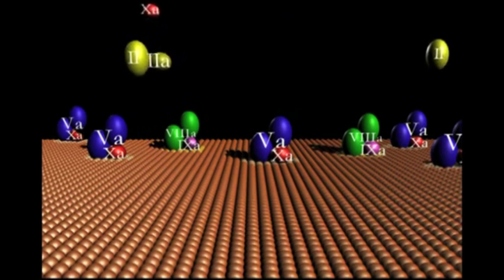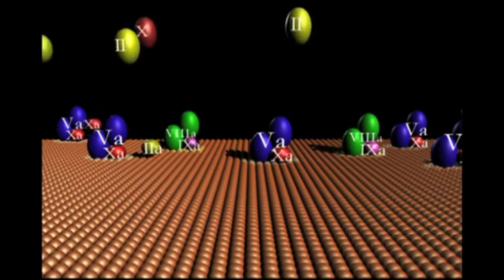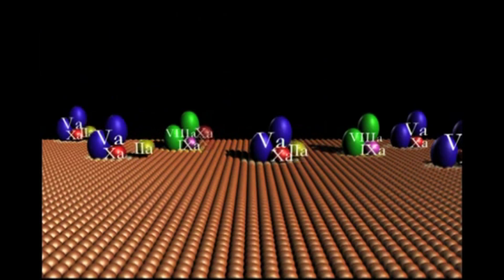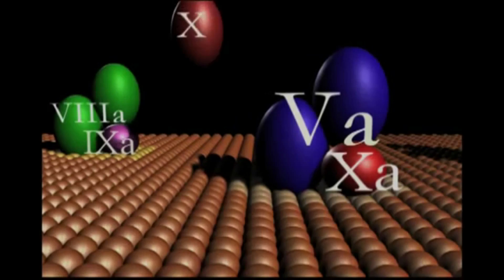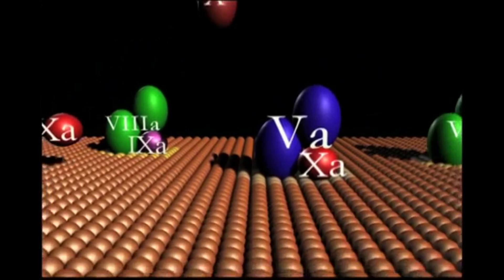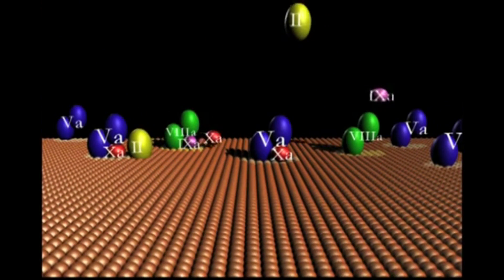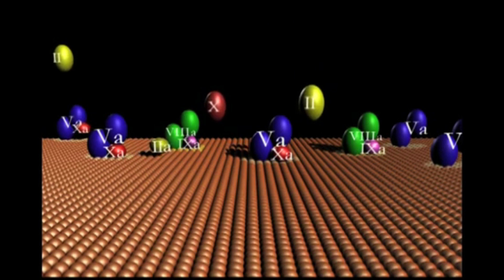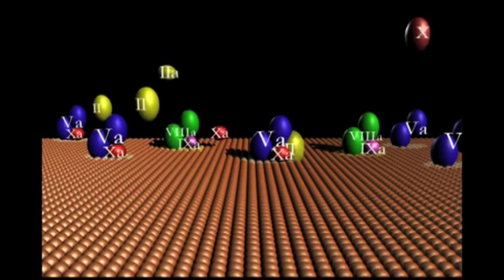These platelet-bound procoagulant catalysts execute the propagation phase of the reaction during which massive amounts of thrombin are produced efficiently and continuously as long as more blood enters the wound site, adding more platelets and resupplying the plasma procoagulant catalytic process.